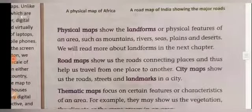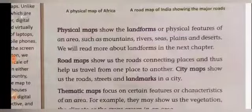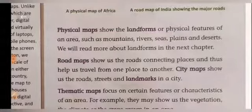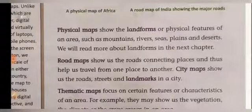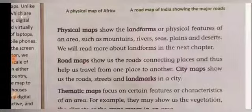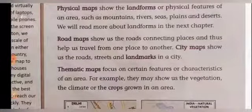The next map is the physical map. A physical map shows landforms or physical features of an area such as mountains, rivers, seas, plains, and deserts. Road maps show roads that connect places and help travelers get from one place to another. City maps show roads, streets, and landmarks in a city. The next map is the thematic map, which focuses on certain features or characteristics of an area — for example, vegetation, climate, and crops grown in the area.